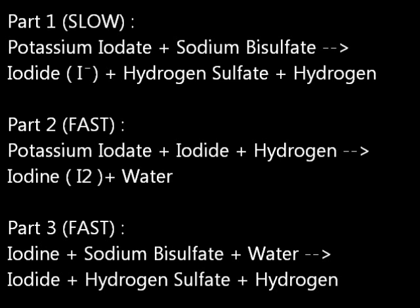The reaction happens in three parts. The first part is the one that determines how long the reaction takes. In the first step, the iodate reacts with sodium sulfate to form iodide, hydrogen sulfate, and hydrogen. This normally takes about 6 seconds depending on the circumstances.